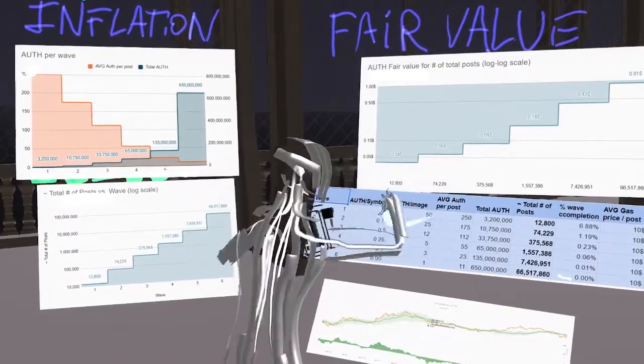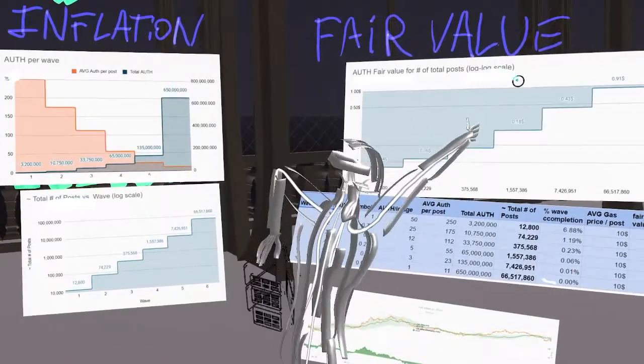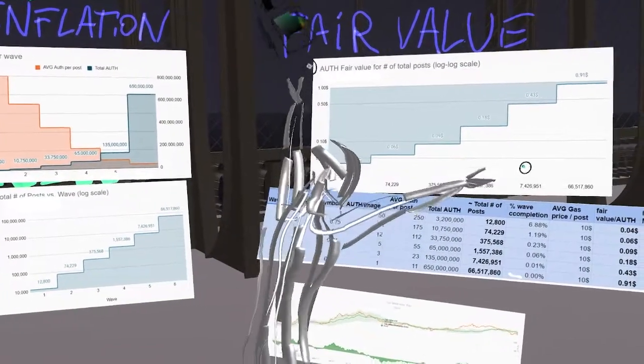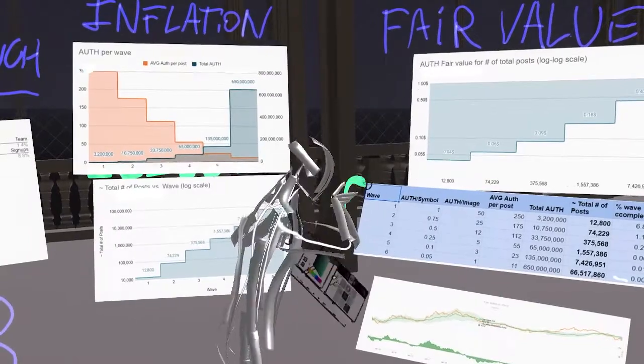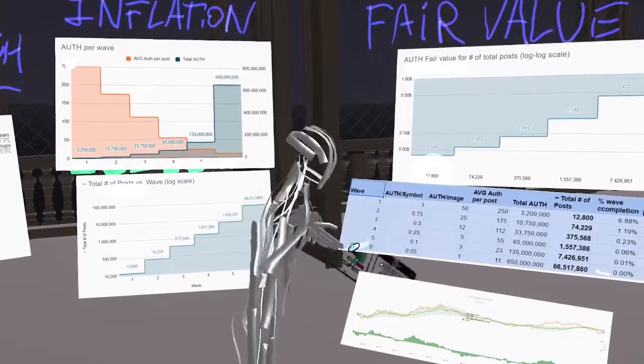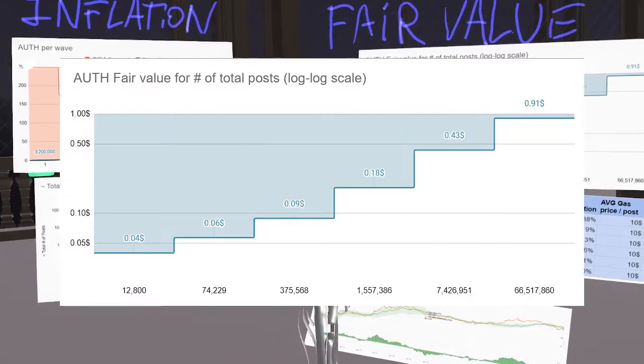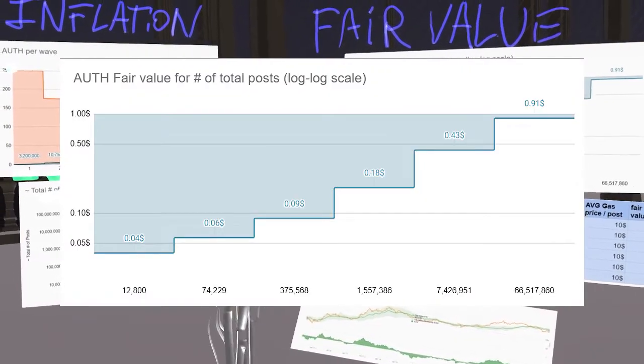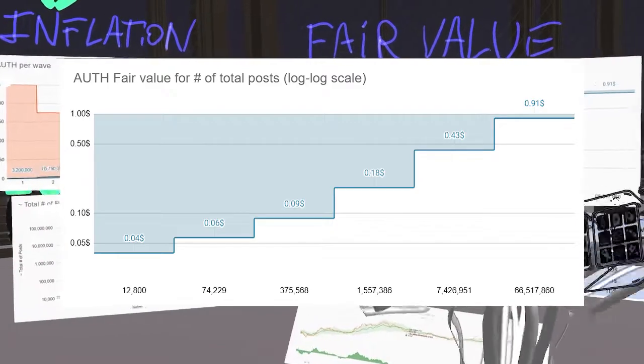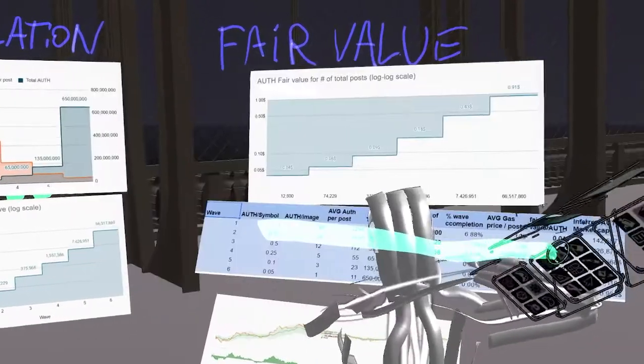Here is a graph of the fair value of auth for the total number of posts. So each phase. Bear in mind that both are logarithmic scales on both axes. As soon as we get over twelve thousand eight hundred posts, then the fair price is going to increase to six cents and to nine and to eighteen and so on and so forth. So this indicator serves as the base reference.